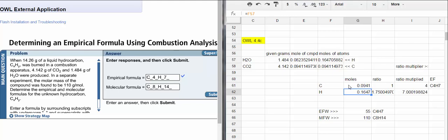The moles of carbon is 0.0941 and the moles of hydrogen is 0.1647. To determine the simplest ratio, I divide both values by the smallest number, which is 0.0941. If you look here, it's cell G61.